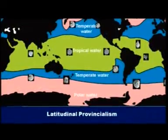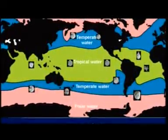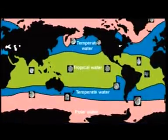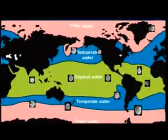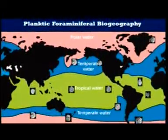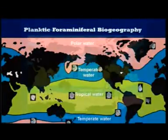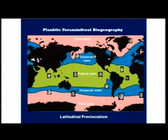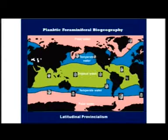Here you can see planktonic foraminifera, preserved as fossils on marine sediments. Individual species are distributed latitudinally — some love tropical waters, some temperate waters, some cold waters, and some transitional waters. So if you look at ancient sediments, with the movement of the plates and passage of time, with the help of these fossils you can interpret the original latitude at which the sediments were once deposited. Thus, you are inferring the plate movements.